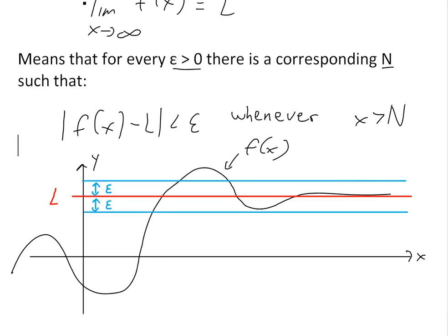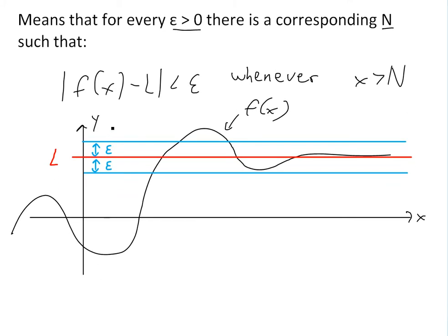Now applying the definition: if you have epsilon — this could be any number — the difference between f(x) and L has to be less than this epsilon. So we draw this epsilon band across like this around L.